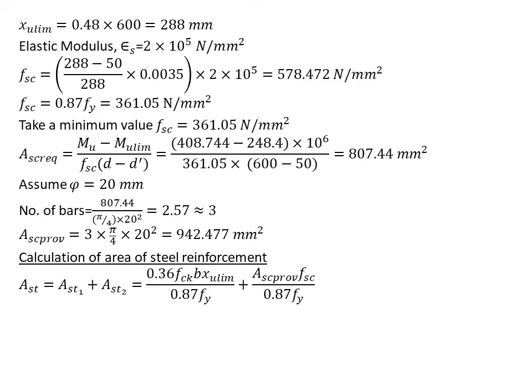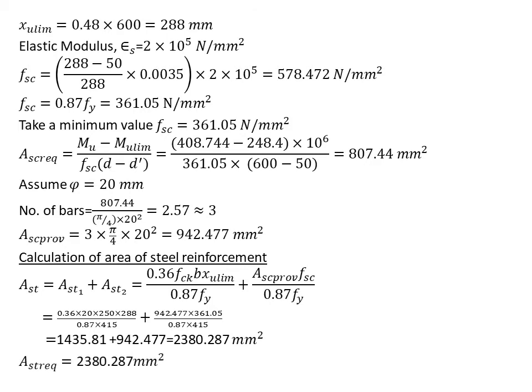Here we use the formula Ast equals Ast1 plus Ast2. Ast1 is the formula used in the tension region, and Ast2 is obtained by using the formula of compression reinforcement. Hence we find the total steel reinforcement area. We know Xu limit, so we can substitute. We write the Xu limit formula in the form of Ast formula. Ast1 is 0.36 × fck × b × Xu limit / (0.87 × fy), and Ast2 is Asc provided × (fsc - 0.87fy) / (0.87fy). We substitute the values and we get the total area of reinforcement: 2380.287 mm².